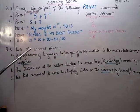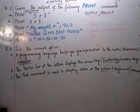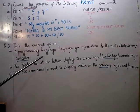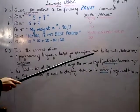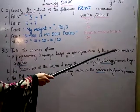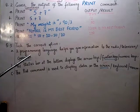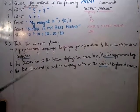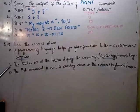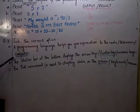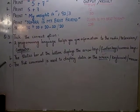Now, in the third exercise, take the correct options. Three options are there. A programming language helps you give information to the radio, television or computer. Which will be the correct one? Obviously, any programming language, it helps us to give information to the computer. Not radio, not television but computer will come.